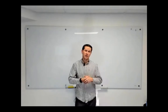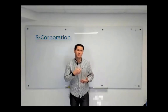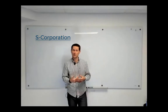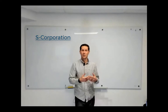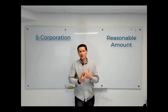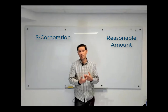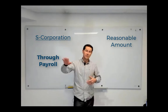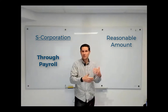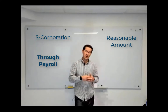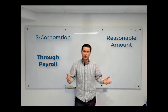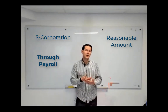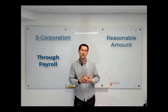If you're an S corporation, when you're being compensated by the S corporation, you're required to take out a reasonable amount — some portion of that compensation through payroll. That means you have to actually run payroll, withhold taxes, remit the taxes to the IRS and to the state every time you run payroll, and file the quarterly payroll tax returns, W-2s, the whole thing. S corporations are required to pay yourself a portion of your income through payroll.